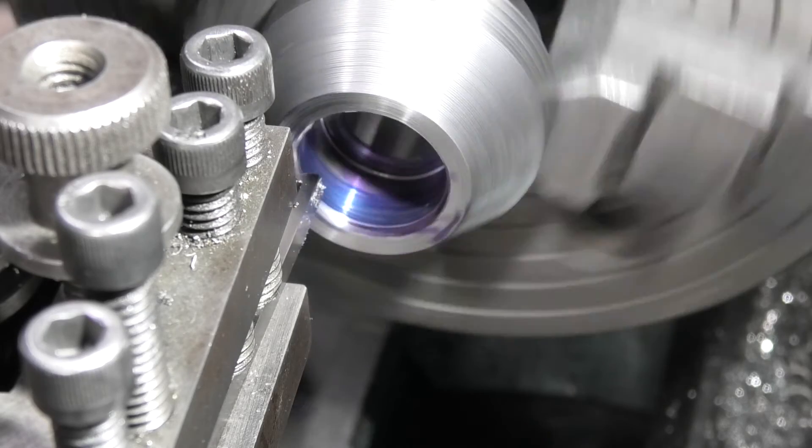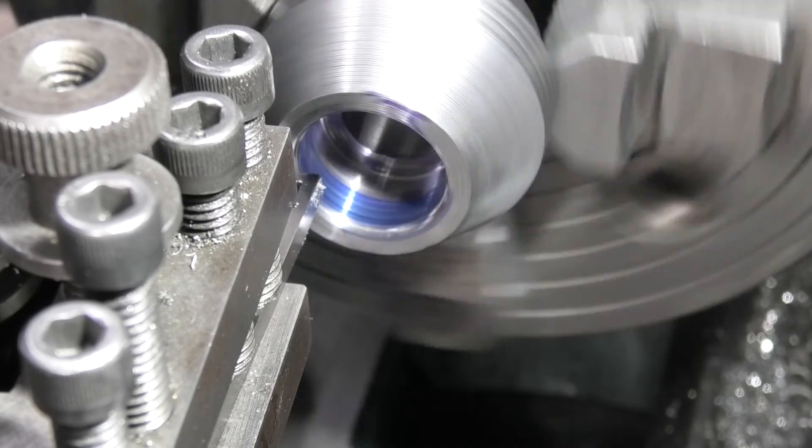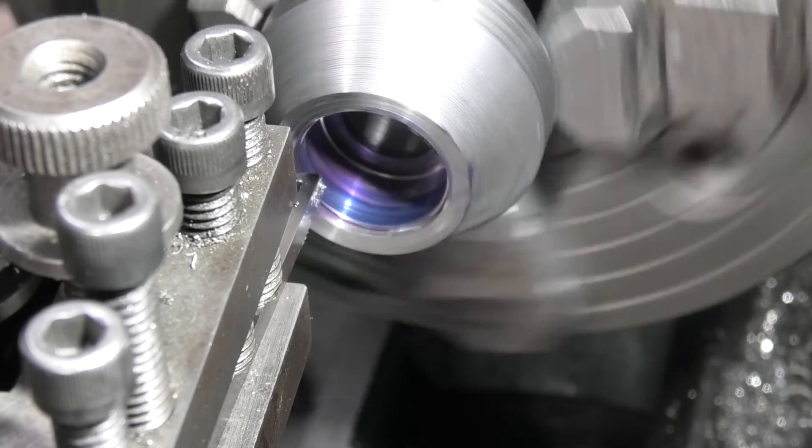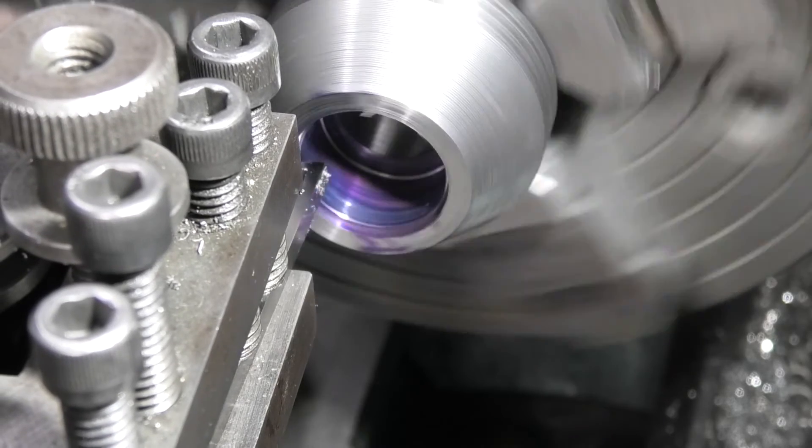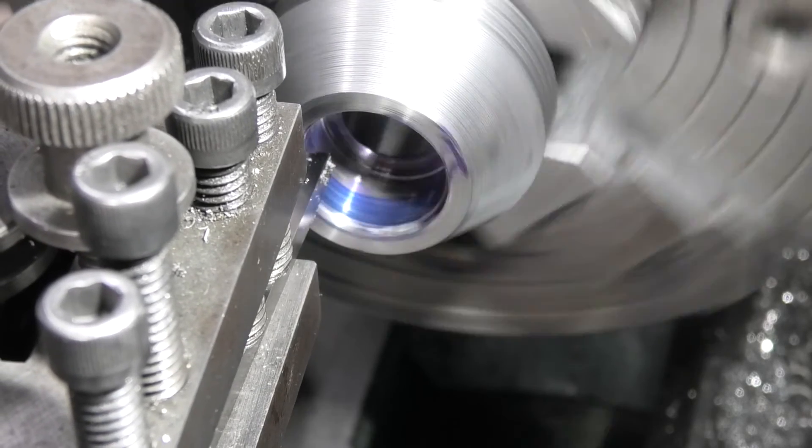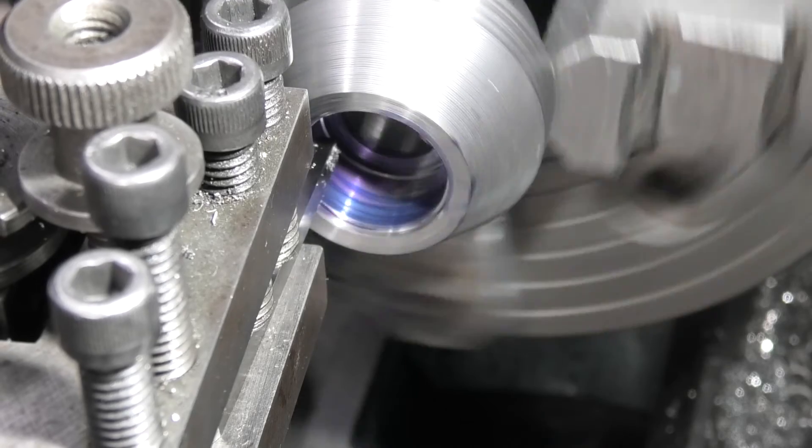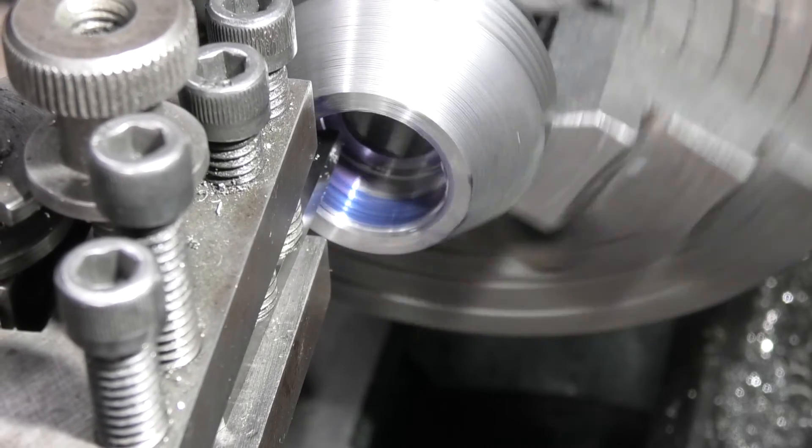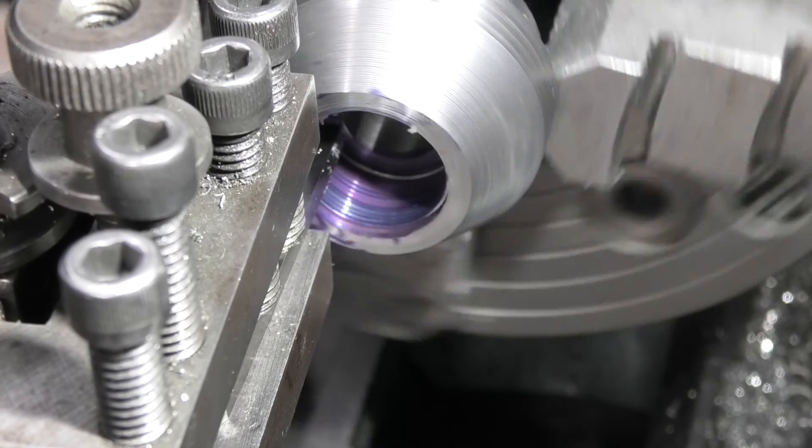I've put some marking blue in the bore and now I'll cut the thread. Now I've engaged it, I'll leave the half nuts engaged when I reverse. I just need to stop before I hit the face.